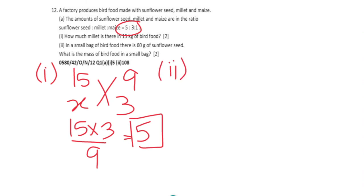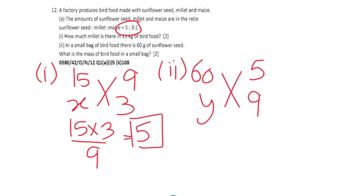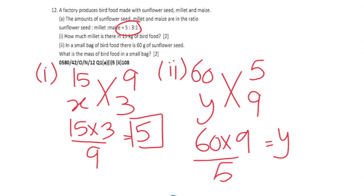Part 2: In a small bag of bird food there are 60 grams of sunflower seeds. Sunflower seeds are represented by ratio 5, and total bird food is represented by 9 parts. Cross multiply 60 times 9 divided by 5, which gives us 108 grams of bird food.